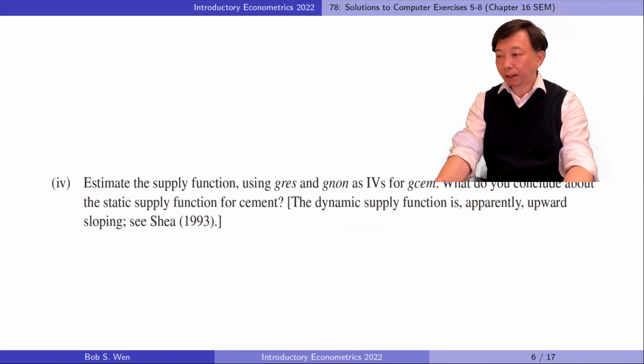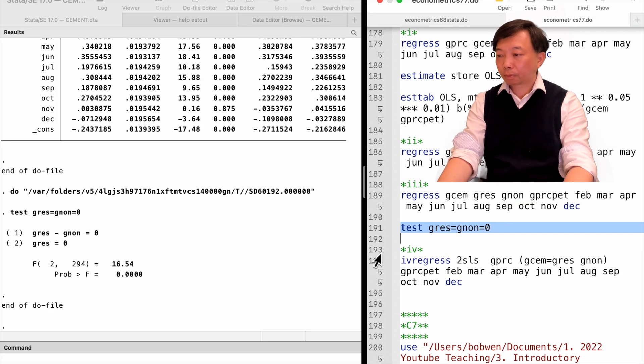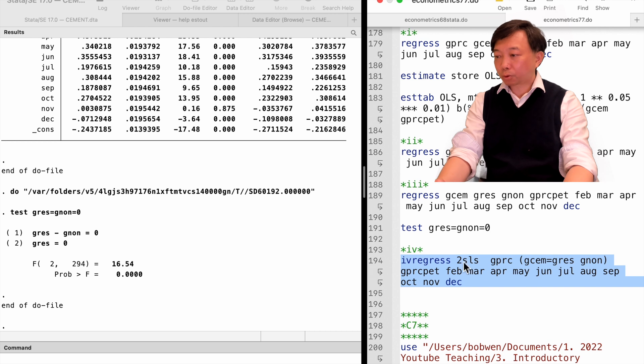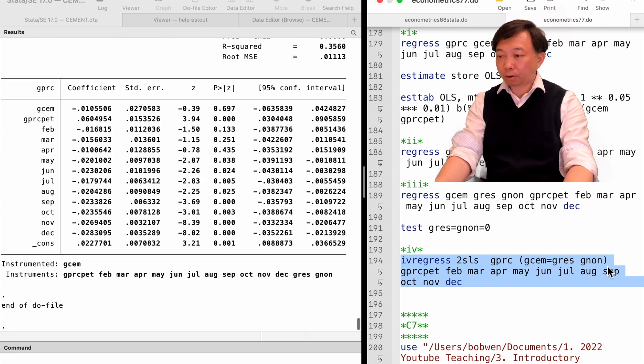In part 4, estimate the supply function with the IVs for G-CEM. What do you conclude about the static supply function for cement? The two-stage least squares estimate for alpha 1 is still negative, but not statistically different from 0. The static supply curve does not slope upward.